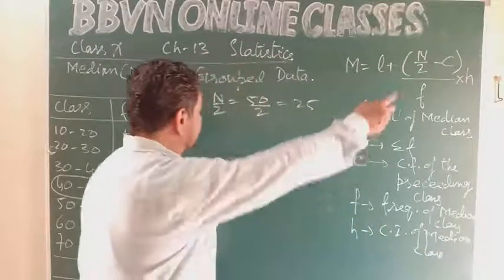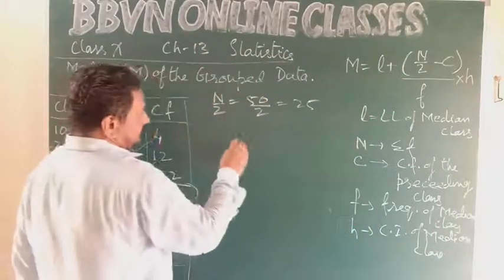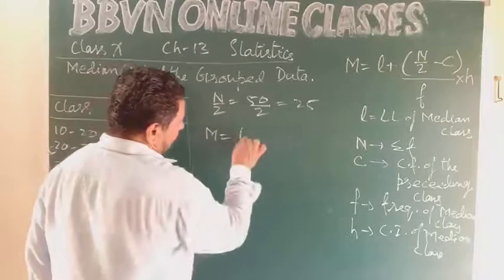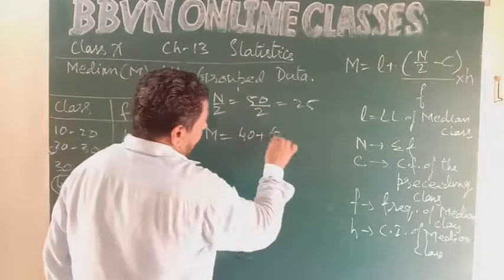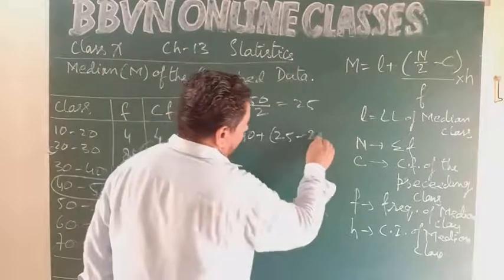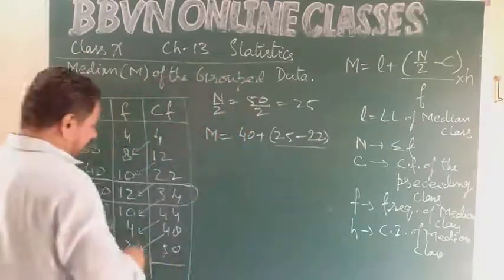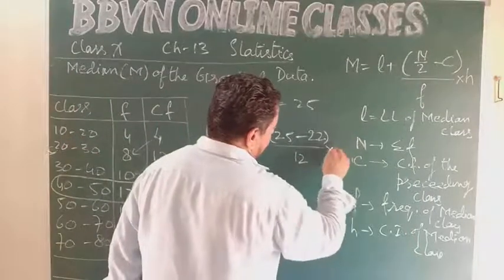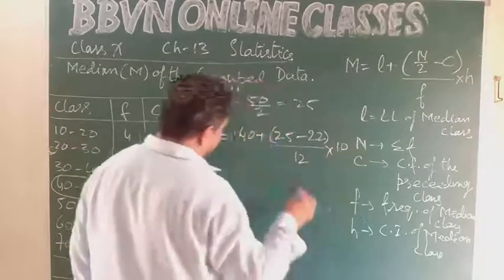Let us substitute the values. Median M equals L, L is 40, plus N upon 2, 25, minus C, C is 22, upon F, F is the frequency of median class, that is 12, into H, H is the class interval, class interval is 10.